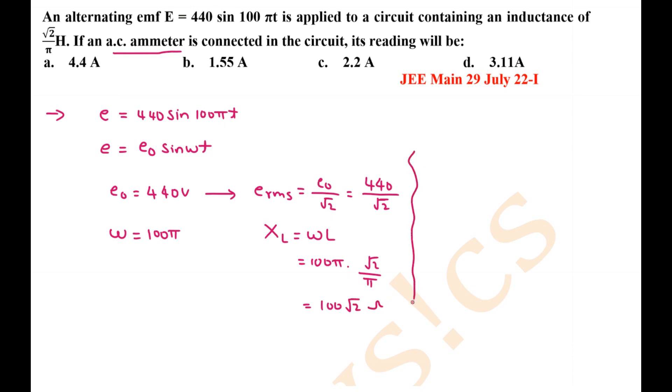So if we use Ohm's law here, IRMS equals ERMS divided by opposition, that is XL. What is voltage? Voltage is given as 440 by √2. What is XL? XL is 100√2. So 440 divided by 100 times √2 times √2 is 2.